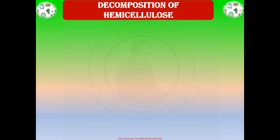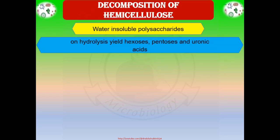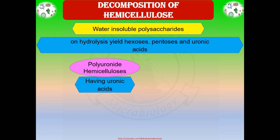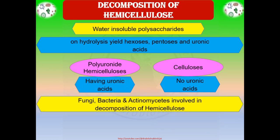Decomposition of hemicellulose. Hemicellulose is also a major component of plants, next to cellulose. These are water-insoluble polysaccharides and upon hydrolysis yield hexoses, pentoses, and uronic acids. Based on the presence or absence of uronic acids, this organic matter is divided into two types: polyuronide hemicellulose, which contains uronic acids, and non-polyuronide hemicellulose. Many fungi, bacteria, and actinomycetes are involved in the decomposition of hemicellulose. Hemicellulase is the enzyme that hydrolyzes the hemicellulose polysaccharides.